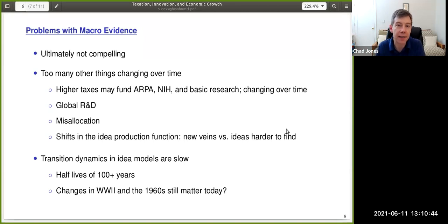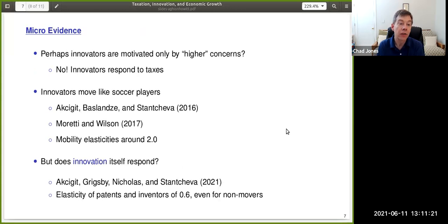Another point along these lines is suggested by economic theory. Here I'm thinking of the contribution by Ackeson and Burstein, among others. The transition dynamics in these idea models are often remarkably slow. So it's very easy in these models to get transition dynamics with half-lives of a century. That means that changes that occurred in the 40s and 50s and 60s may still matter for growth today. We may only be halfway through those transition dynamics. And so again, the very long lags make it quite difficult, I think, to use simple time series evidence to draw really strong conclusions about taxes and growth.